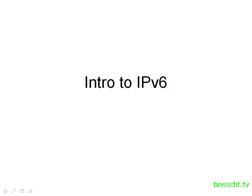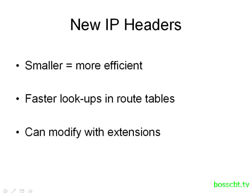Let's take a closer look at some of the features and improvements we get by using IPv6. First, let's talk about the new IP headers in version 6. They are smaller than what we had in version 4, and that means they're more efficient. Because we have less information inside the IPv6 header, less processing power is required from the router every time it receives a packet. If there's less information to go through, there's less resource demand on the router itself, which results in faster lookups in the IP route tables.